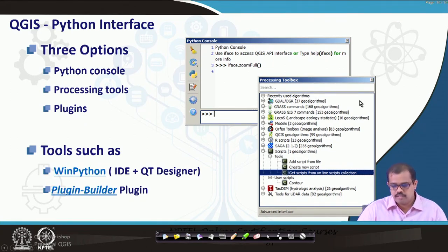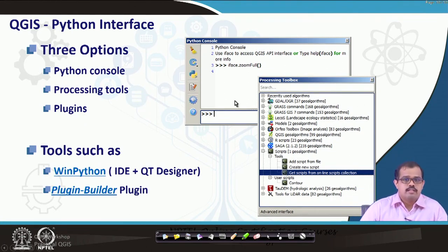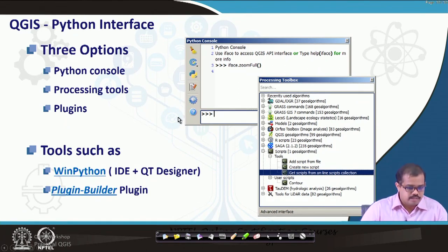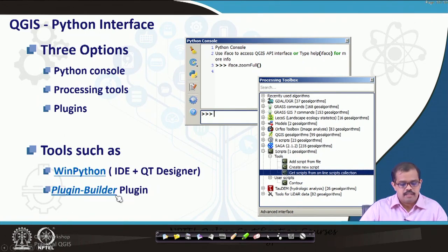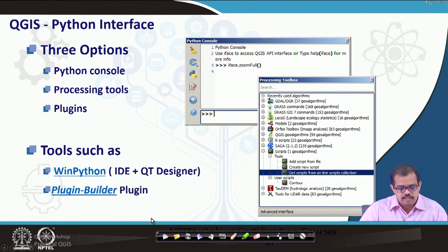These are different things you can explore when you want to be an advanced GIS user using QGIS. There are also tools such as WinPython and Plugin Builder — Plugin Builder is a tool wherein you can start building plugins for particular applications.